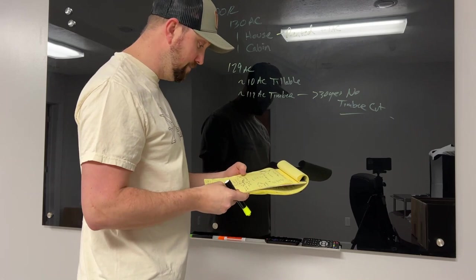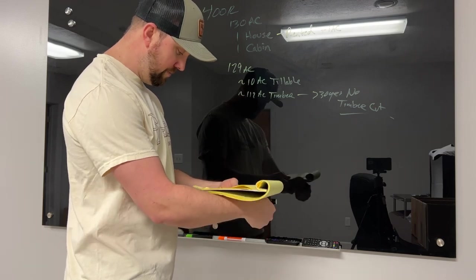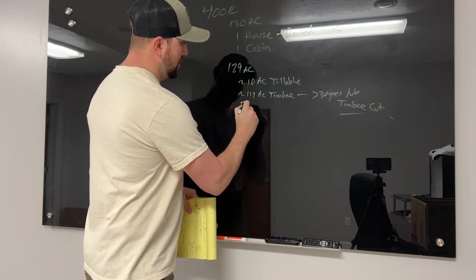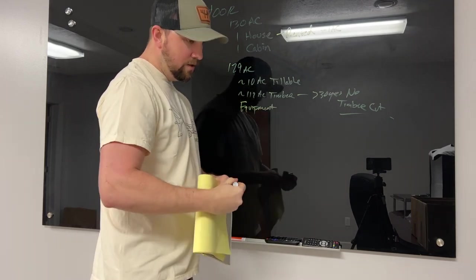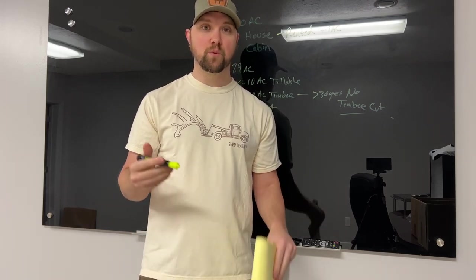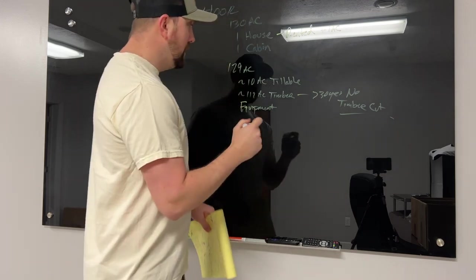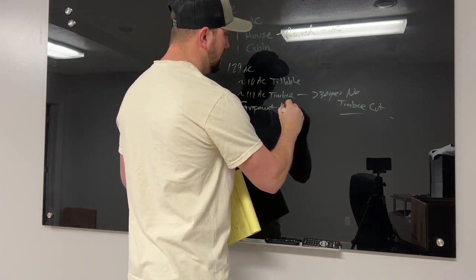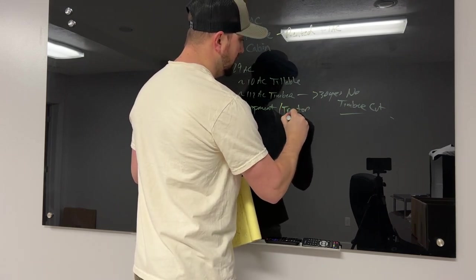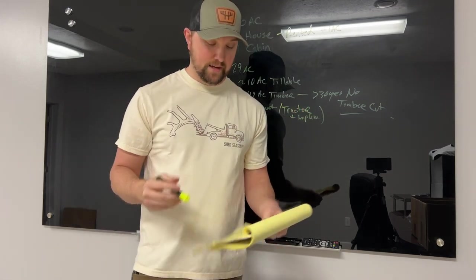The other big thing that this property came with is equipment. The landowner had a fairly new 40-plus horse Kubota tractor on there, had a tiller, brush hog, and a grader. Between the tractor and implements, that gives me something that I can run with pretty quickly.